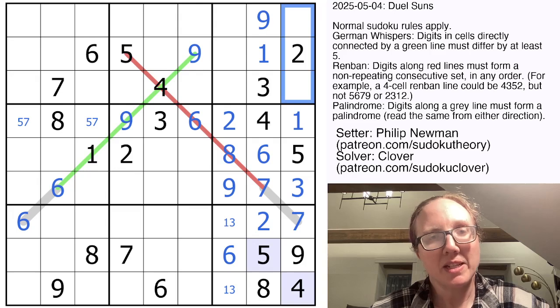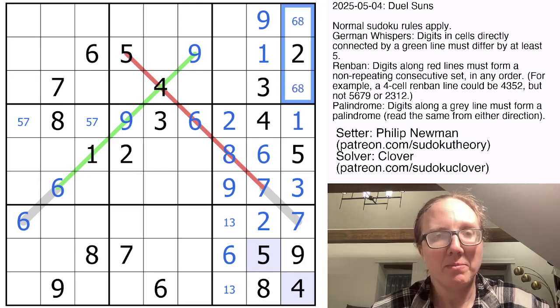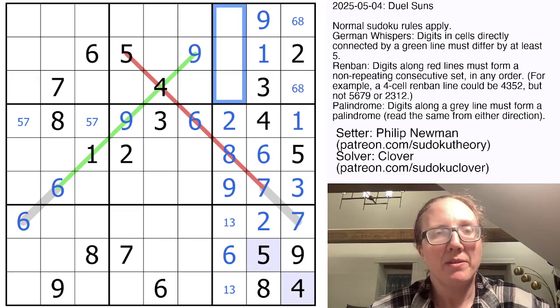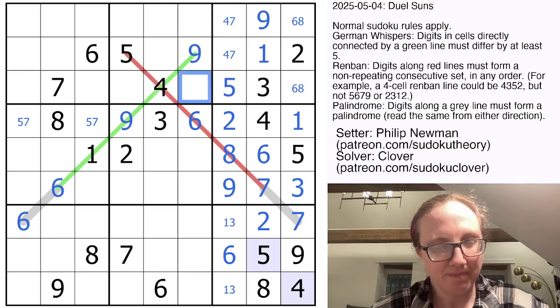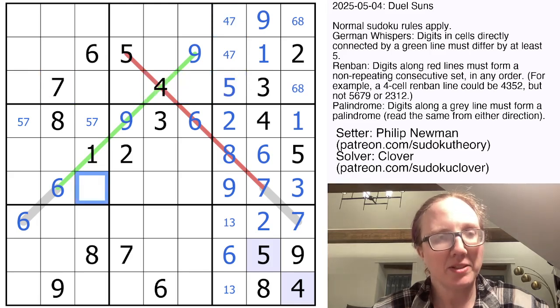In this column, we need six and eight, which we can pencil in. And in this column, we need four, five, and seven. That's not a five. This can't be a four or seven. So that is our five. Now let's look at this row.